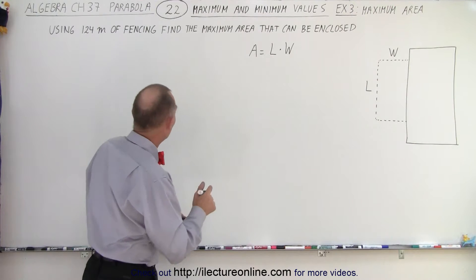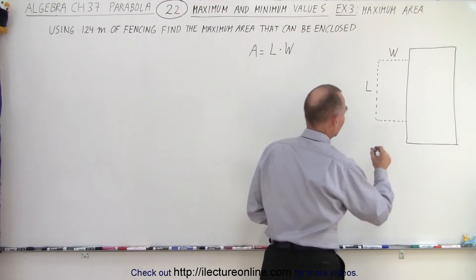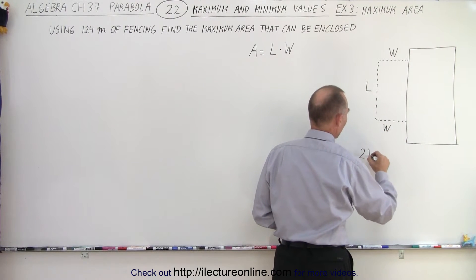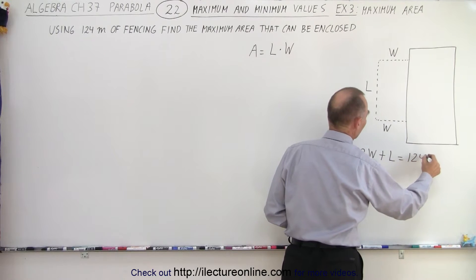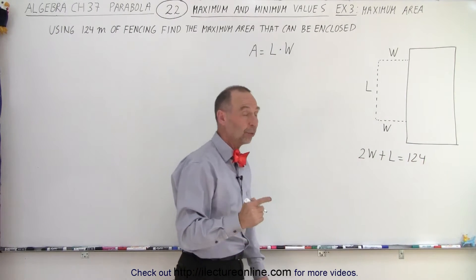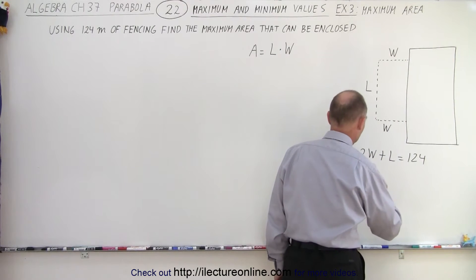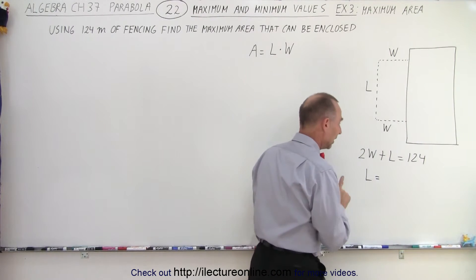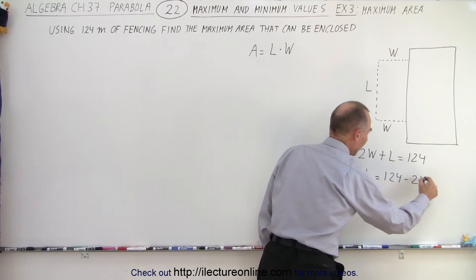So we have to find a relationship between the length and the width. But since we have a total amount of fencing of 124 meters, and since this is also the width, we know that twice the width plus one time the length is equal to 124, which means we can represent one in terms of the other. So what we can say is that the length is equal to 124 minus twice the width.